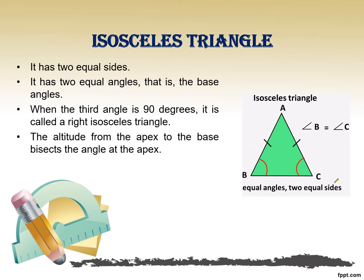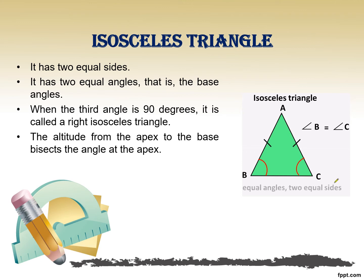These angles are mostly base angles. Whenever we have a right angle in the isosceles triangle, we term that type as a right angled isosceles triangle. One major property is that the altitude from the apex to the base divides the angle at the apex into two equal parts.